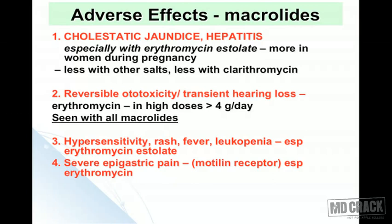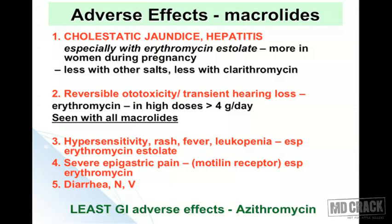Due to the motilin receptor agonist property, erythromycin can stimulate GI motility and produce spasmodic or severe epigastric pain, as well as diarrhea, nausea, and vomiting. The least gastrointestinal adverse effects among macrolides are seen with azithromycin.